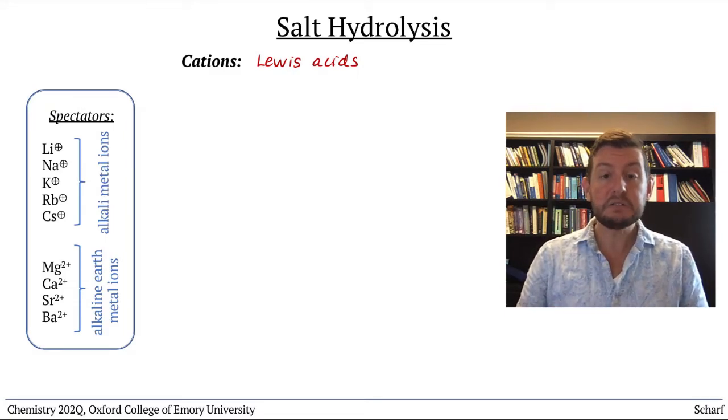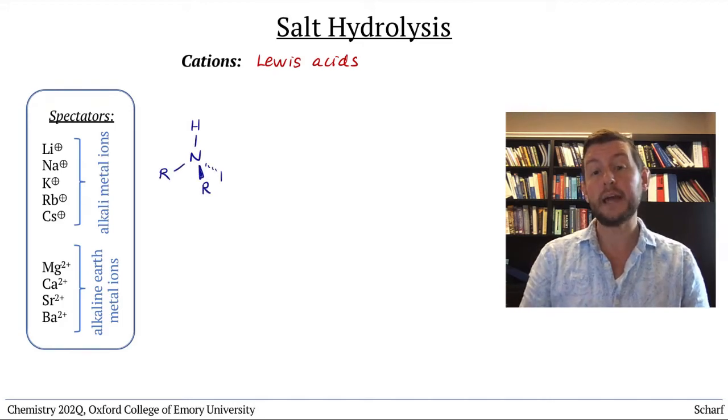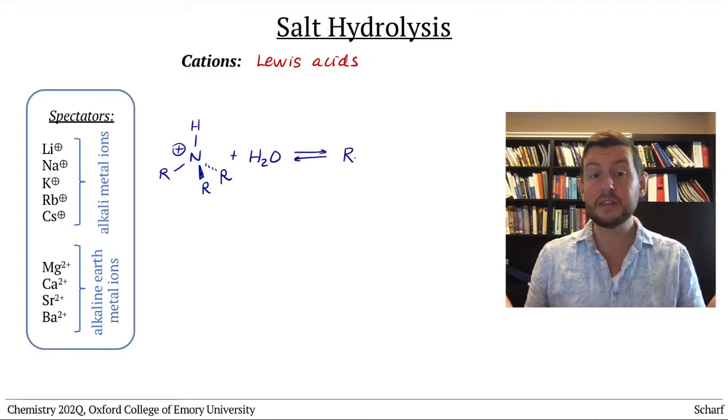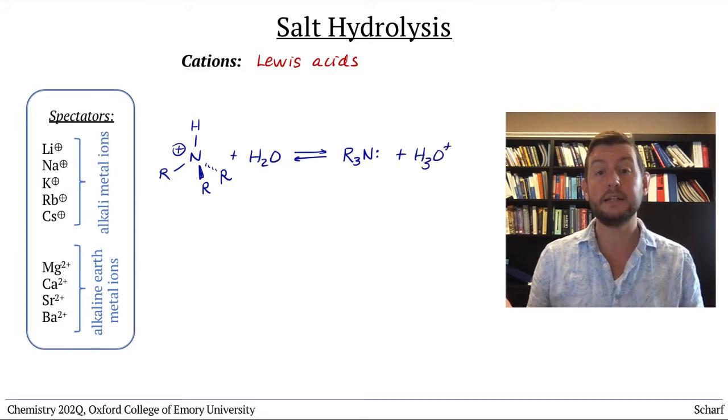Some cations, such as ammonium ions, R3NH+, act as Bronsted-Lowry acids. We treat them as we would any other weak Bronsted acid, using ICE tables and their Ka values.